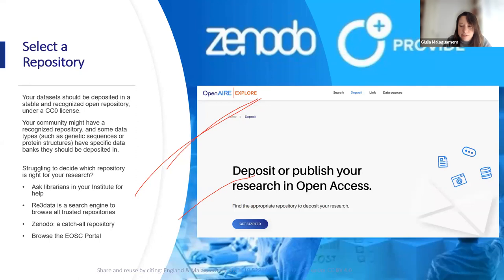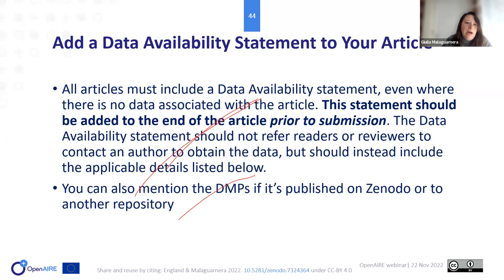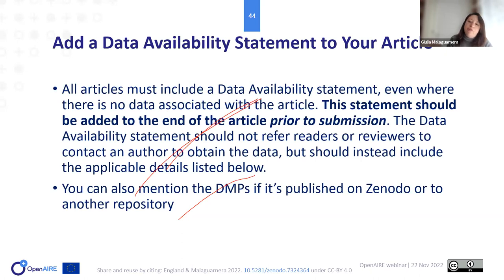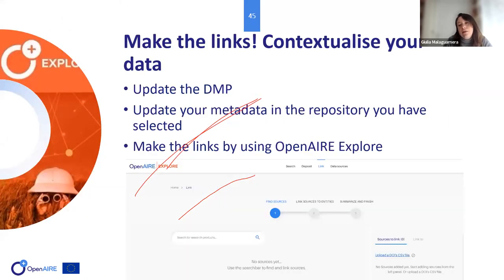Explore is another OpenAIRE service. You can add a data availability statement in your article in Open Research Europe — for instance in a data note — which is a statement that should be added at the end of the article before submission. You can also mention the DMP if it's published on Zenodo or another repository, and provide the DOI in the data availability statement of your article. Then you can make links and contextualize your data in Explore. At the 'link' tab you can find resources and also proceed to linking different entities.